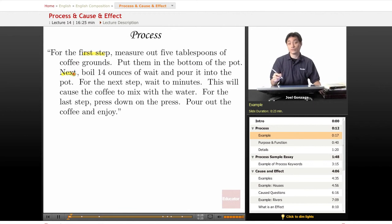Next, boil 14 ounces of water and pour it into the pot. For the next step, wait two minutes. This will cause the coffee to mix with the water. For the last step, press down on the press, pour out the coffee and enjoy.